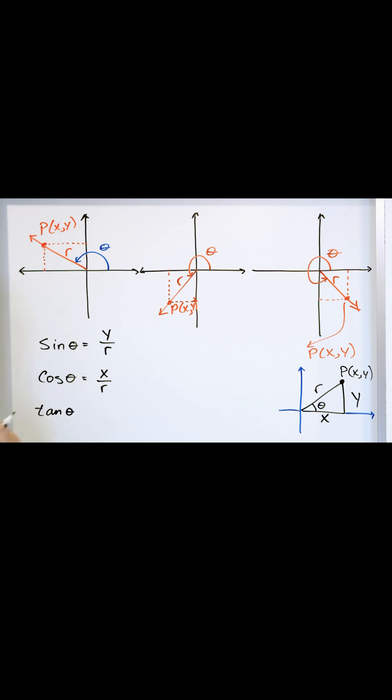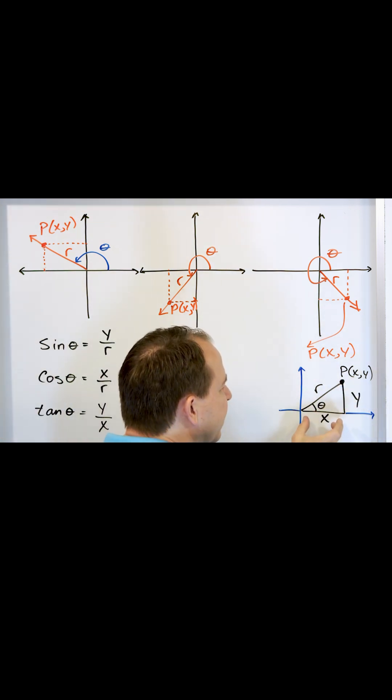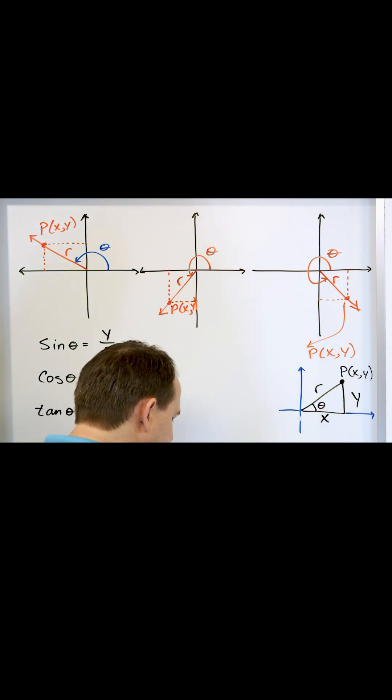So then what would the tangent be? Now I'm gonna tell you a secret. The tangent is defined as y over x. Now you may say, hey, I don't remember you saying that. Well, think about it. We said tangent of the angle was opposite over adjacent. So we're gonna call it y over x.